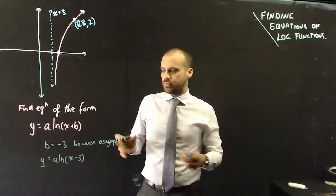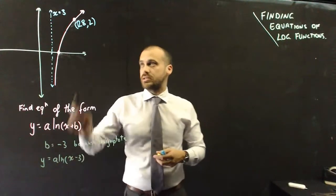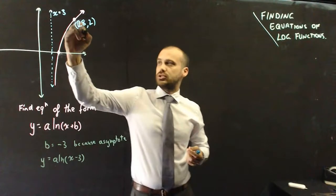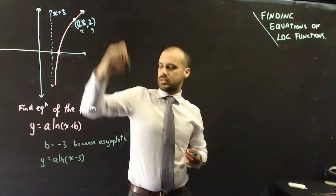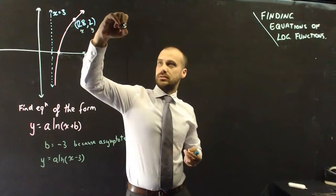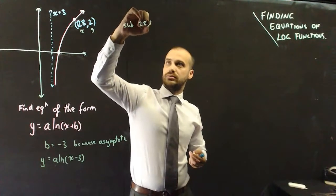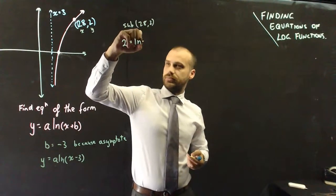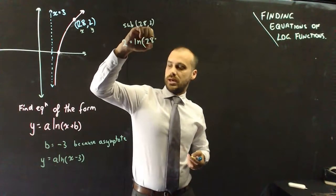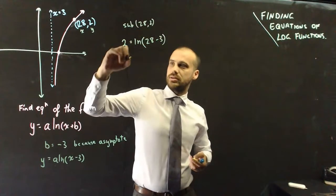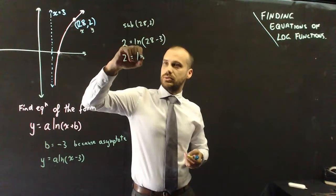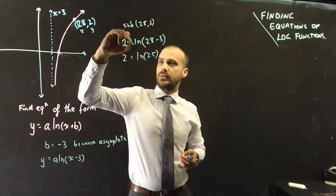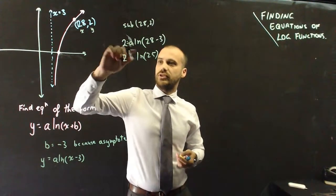From here, it's a really straightforward process. We need to find out what a is. We can see that there's a point 28, 2. There's that x and our y value. So I can sub that into my equation. Sub 28 on 2. So we have 2 equals a ln(28 minus 3). 2 equals a ln(25). Oh, there's an a there, isn't it? That's the thing we're trying to find in the first place.